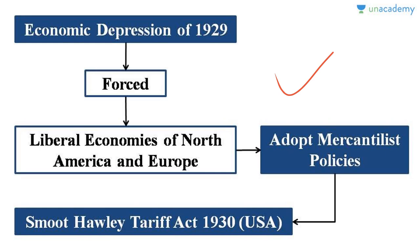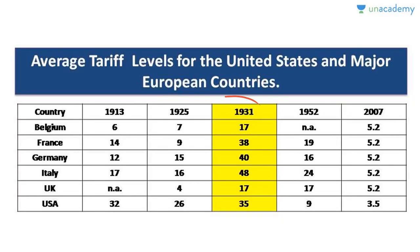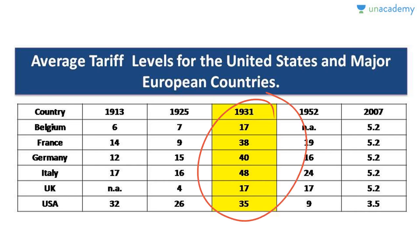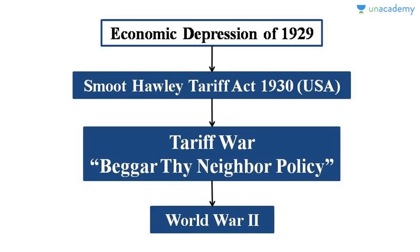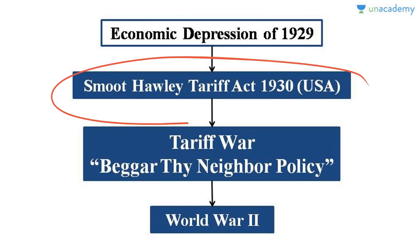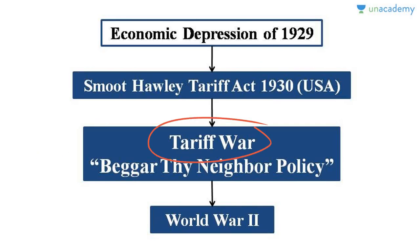In reaction to America's tariff increases, other European countries also raised their tariffs. Britain raised tariffs against American goods, and Belgium, France, Germany — all countries raised their tariffs. This competitive raising of tariffs is what economists call a tariff war. The economic depression of 1929 led to the passage of the Smoot-Hawley Tariff Act, which acted like a trigger for this tariff war. Countries adopted a policy sometimes referred to as the 'beggar thy neighbor' policy.